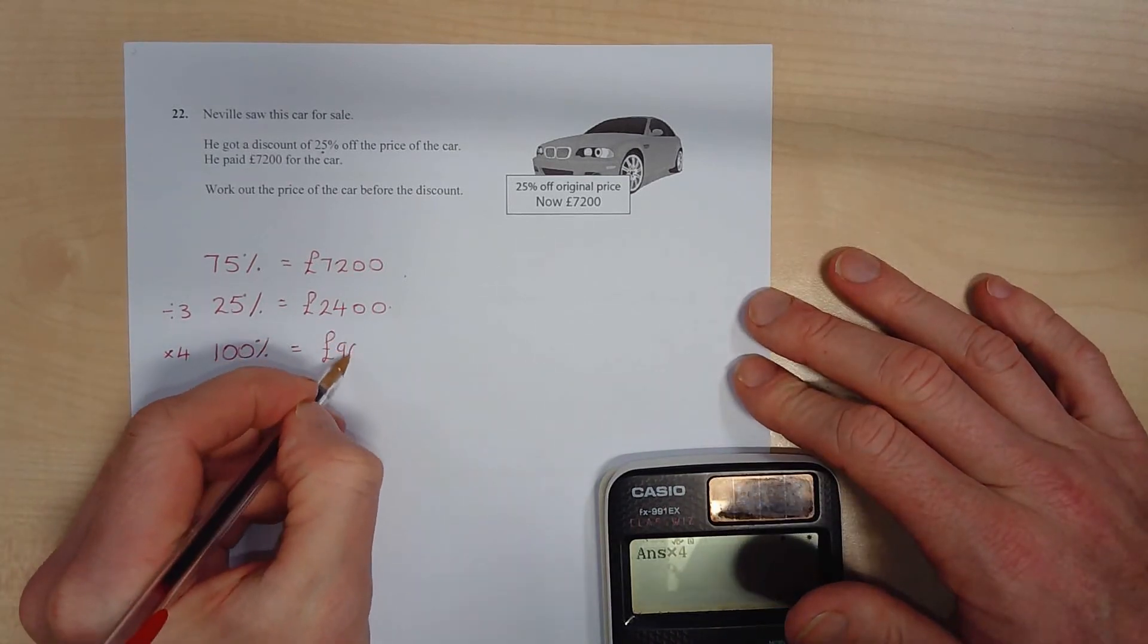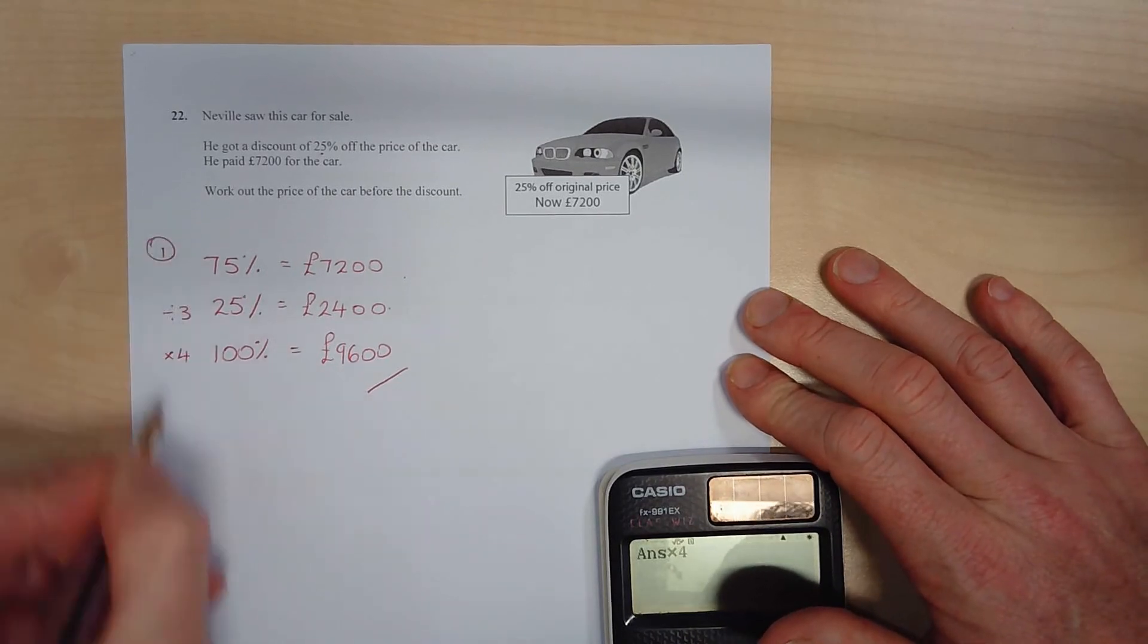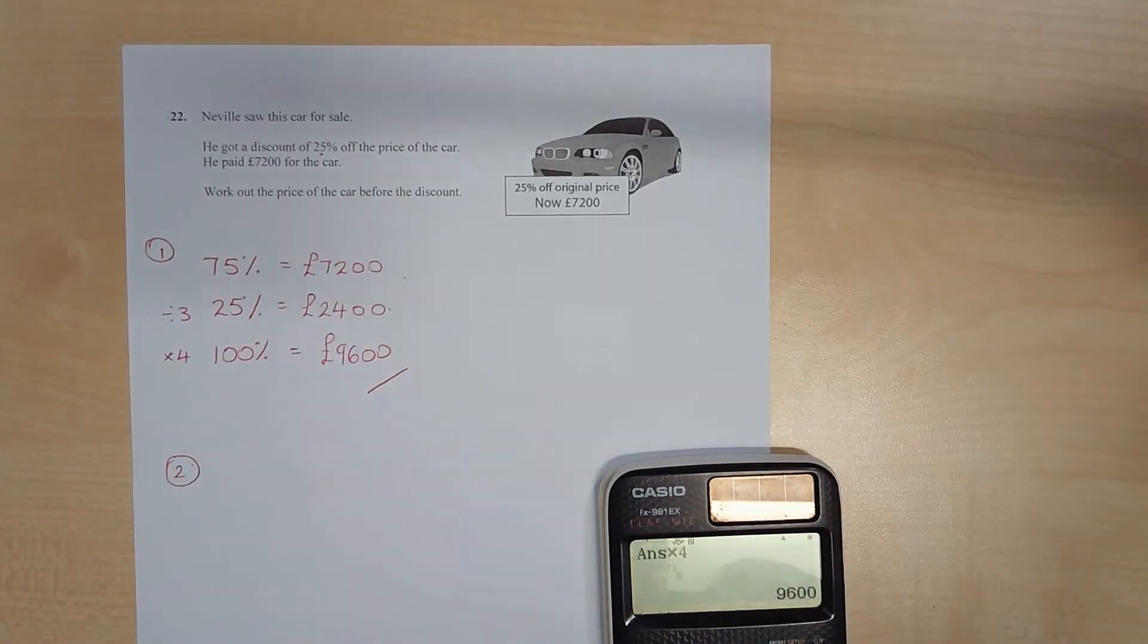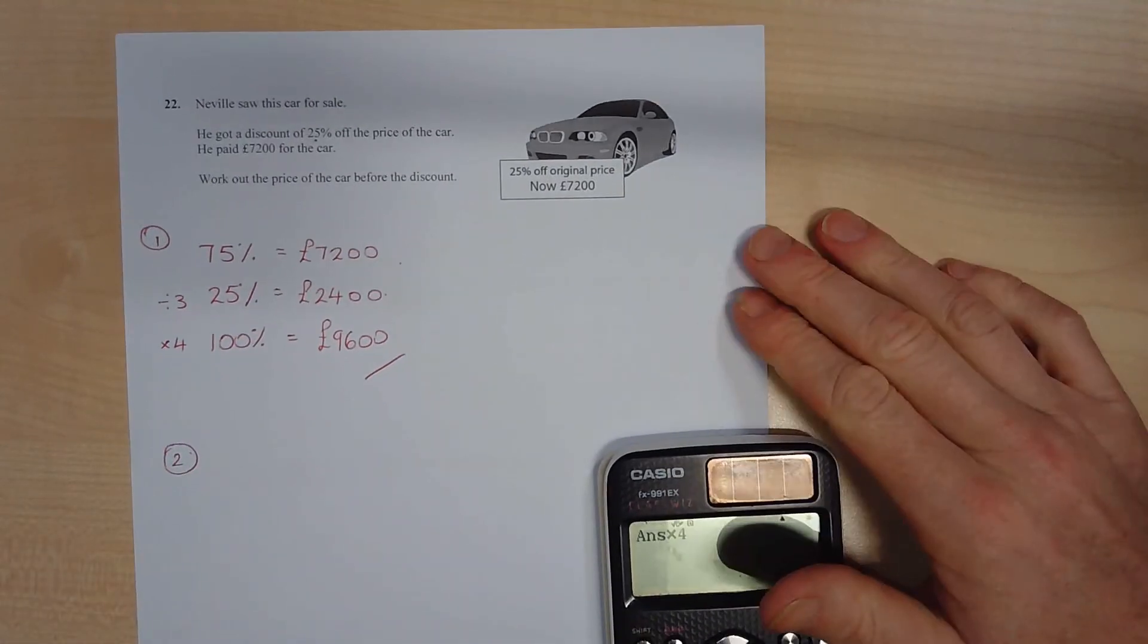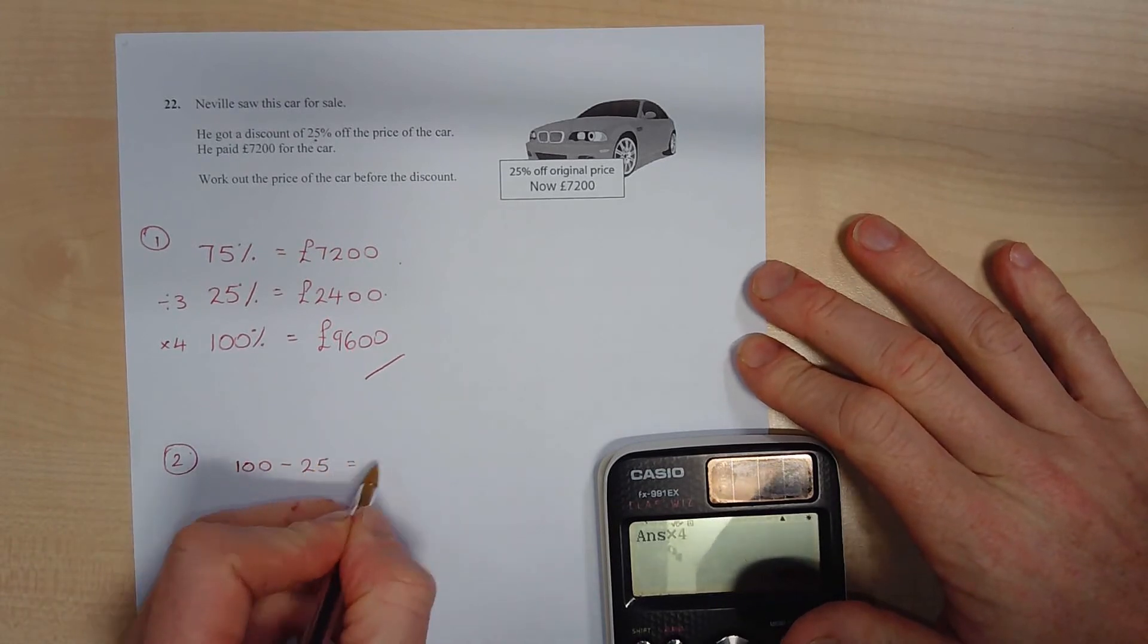And then we're going to times this by 4 and I get 100%, which will be the original. So it must have been £9,600. Okay, that's one way to do it.